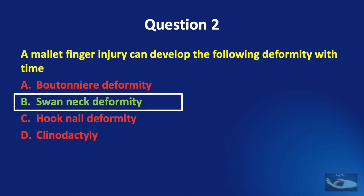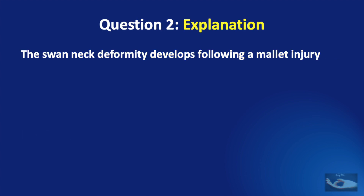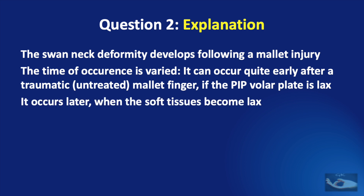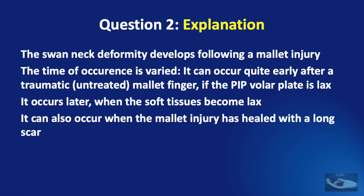The correct answer is the swan neck deformity. The swan neck deformity develops following a mallet injury but the time of occurrence is varied. It can occur quite early after a traumatic untreated mallet finger if the PIP volar plate is lax, a little later when soft tissues become lax slowly, or when the mallet injury has healed with an elongated scar.